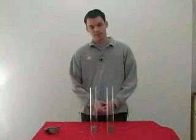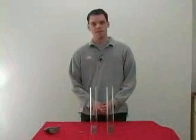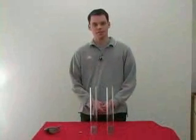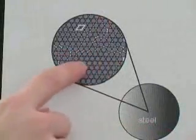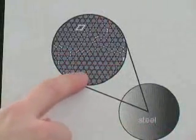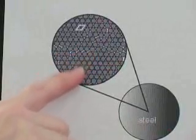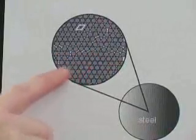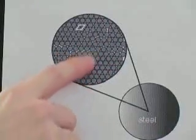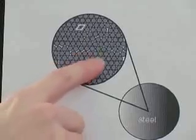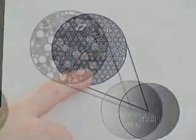The stainless steel base is a crystalline material. That means that the atoms in it are arranged very regularly. When the ball bearing hits, these atoms can slip past each other. Think about bouncing a basketball into some sand. When the ball bearing hits, all of its energy goes into moving the atoms.